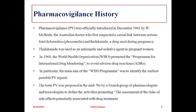Pharmacovigilance was officially introduced around December 1961 after the thalidomide tragedy. Thalidomide caused serious adverse effects in children born to pregnant women who took it. The drug was banned after this tragedy, following which pharmacovigilance was officially established worldwide. An Australian doctor, W.M.C., first suspected the casual link between serious fetal deformities — phocomelia — and the thalidomide drug used during pregnancy.